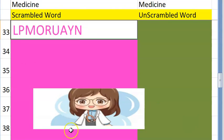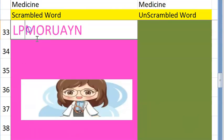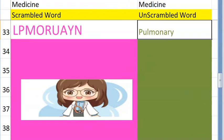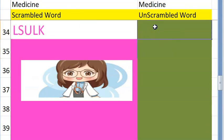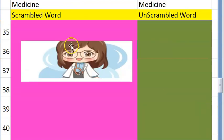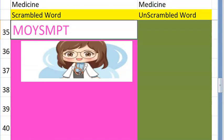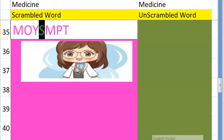The thirty-third one is anatomy related to your lungs, starting with P — pulmonary. Very good! The thirty-fourth one — again anatomy — starts with an S, your head — yes, skull. Very good!